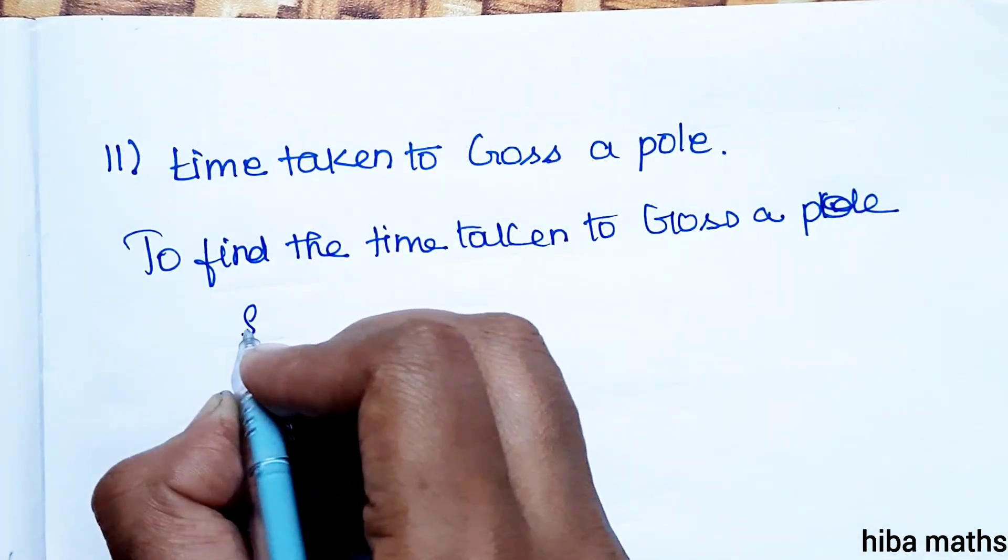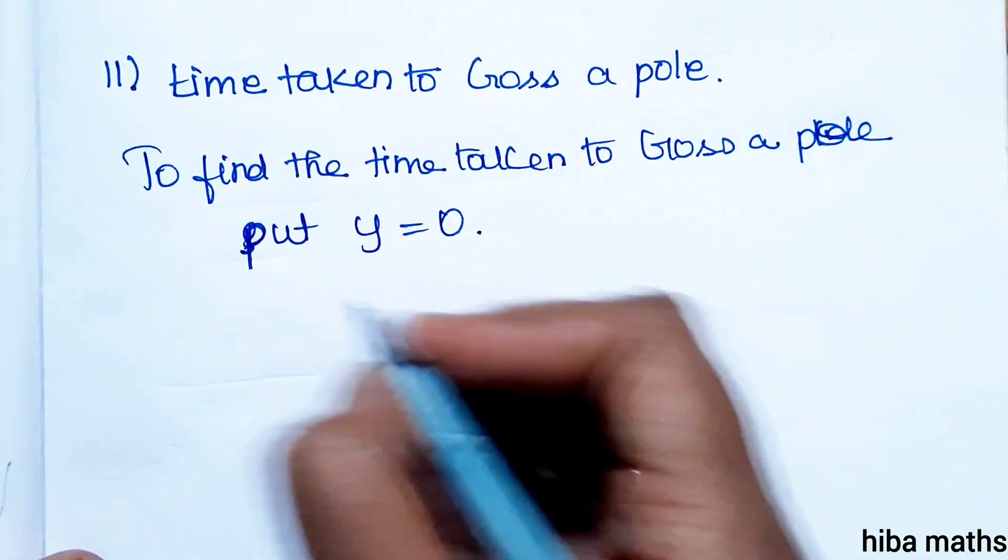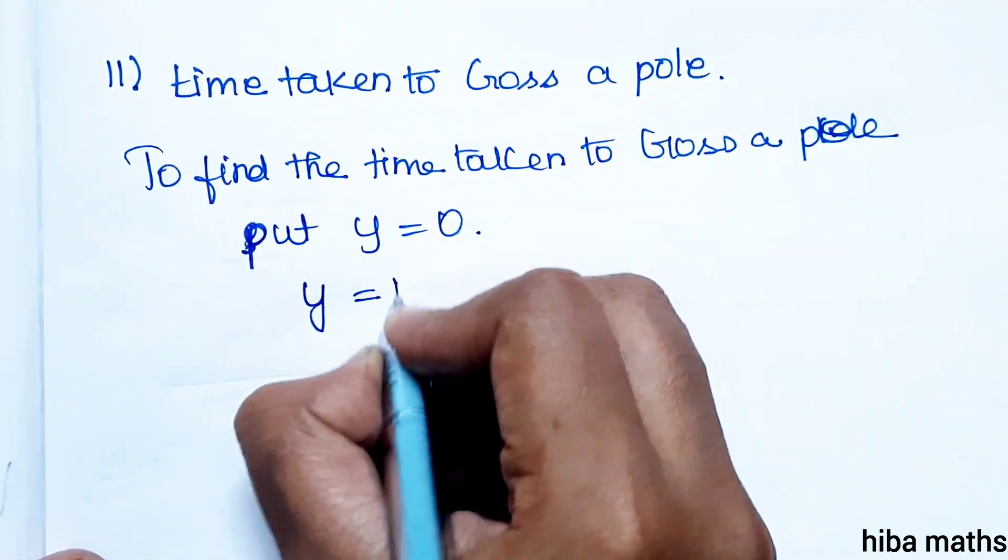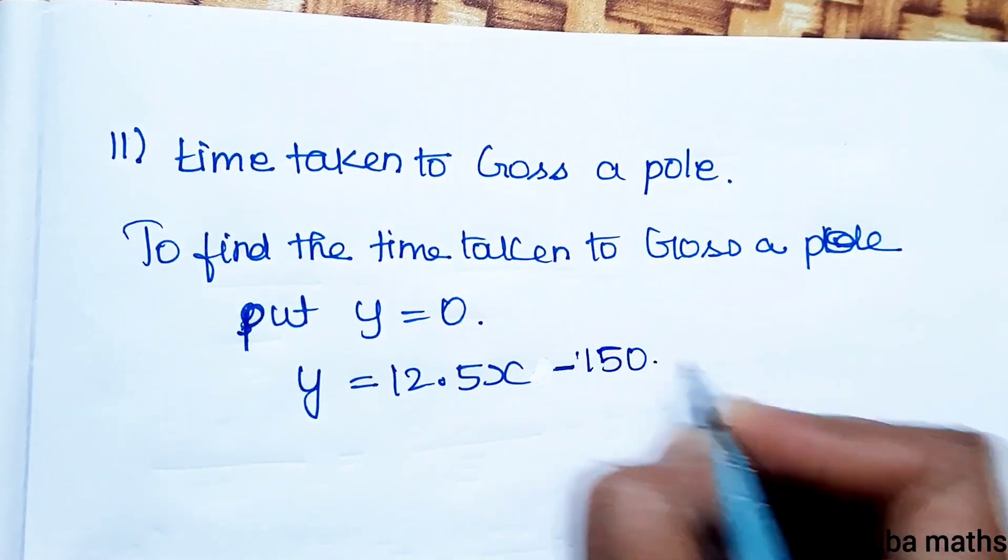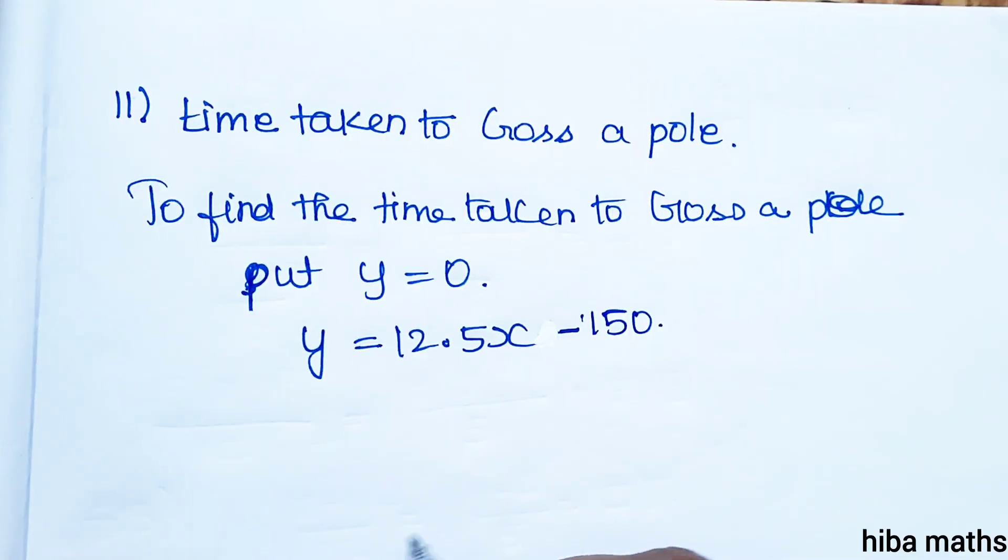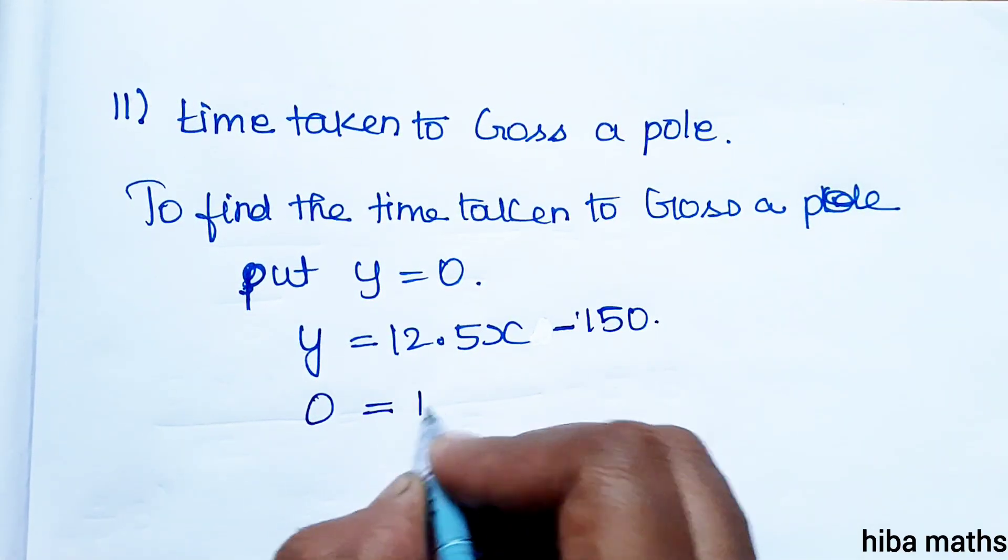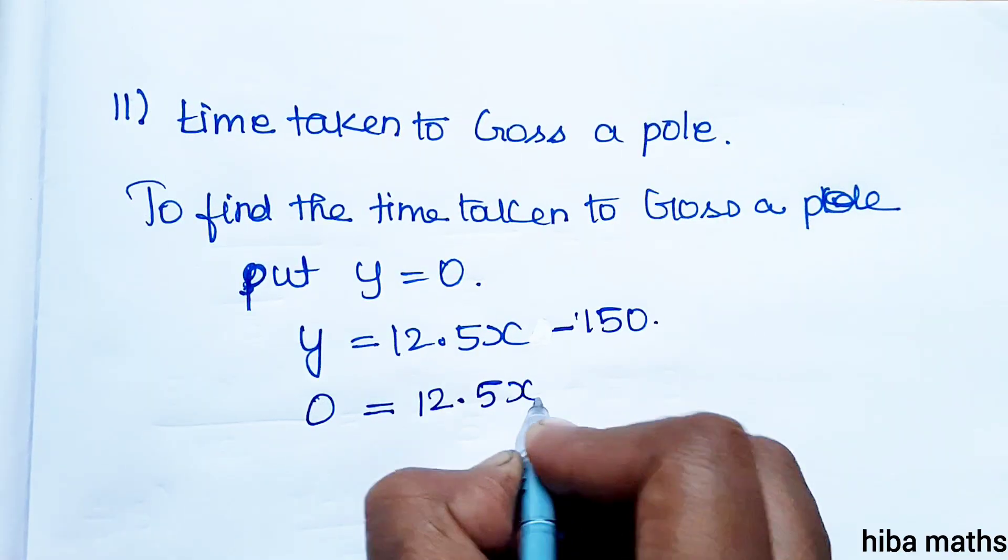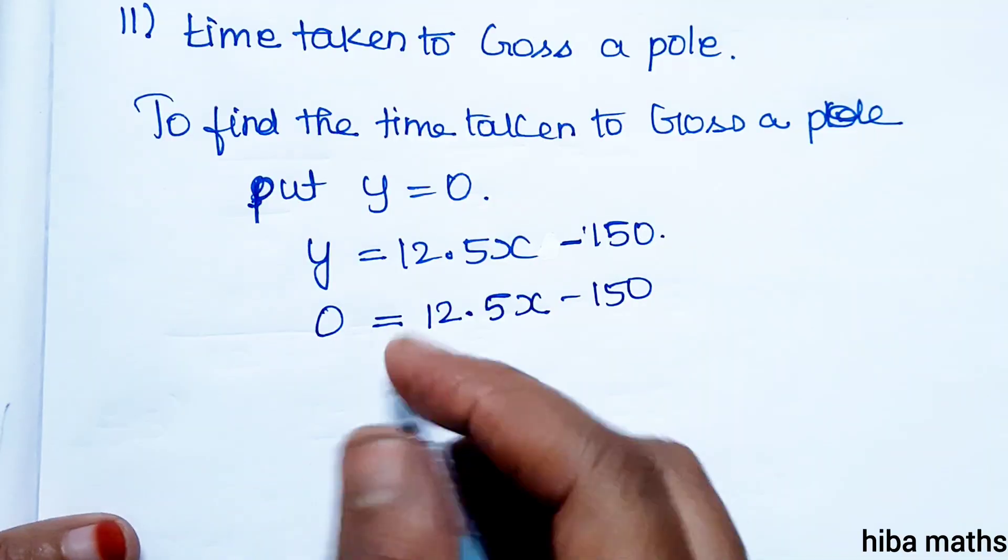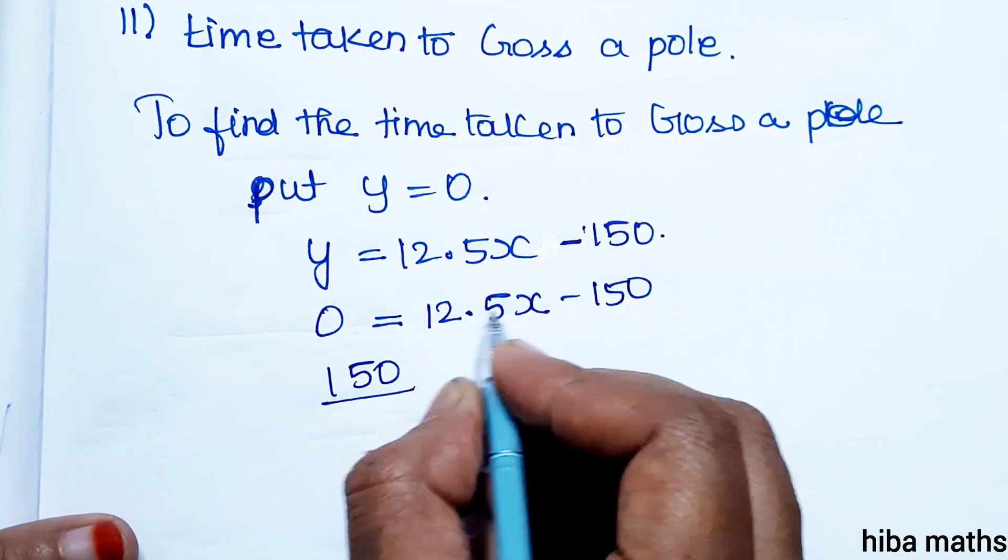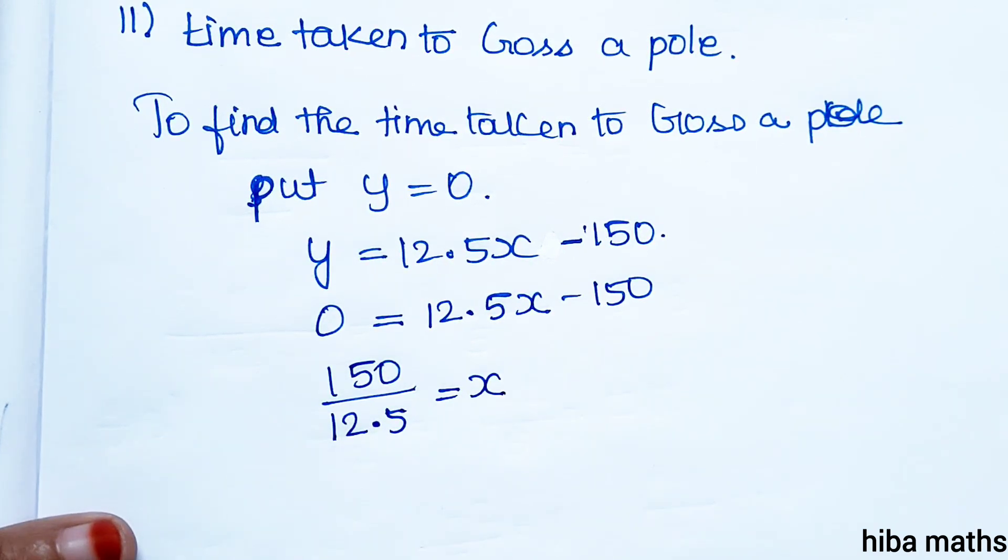Then put y = 0 in equation. So equation is y = 12.5x - 150. If y is at the value of 0, we will substitute the value of x. Therefore, 0 = 12.5x - 150. Minus 150 to the other side: 150 divided by 12.5 is equal to x.